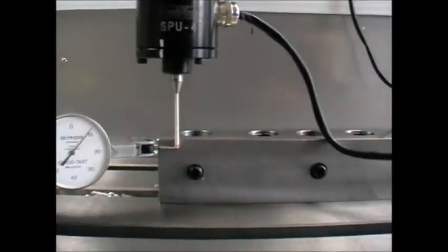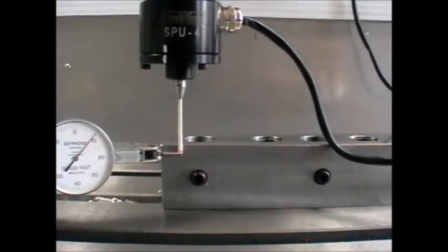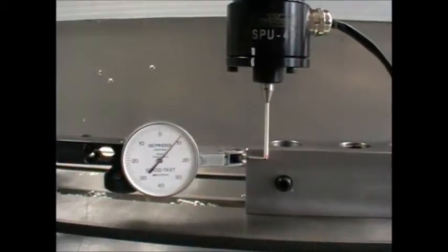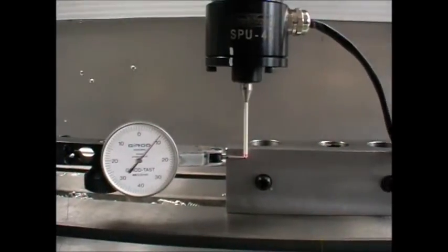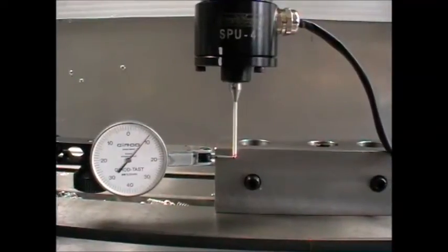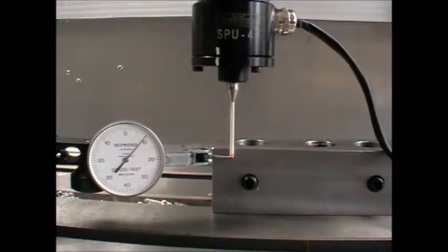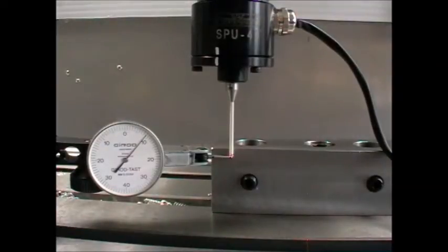The flex is actually, on average, quite a few thou. You know, say 9 hundredths is 3 thou, approximately. So that needs to be allowed for when you're entering the diameter in the tool table.